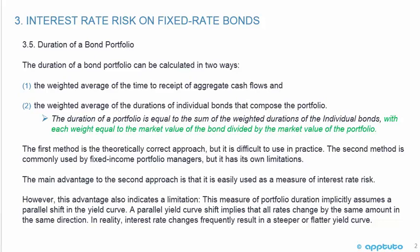This measure of portfolio duration implicitly assumes a parallel shift in the yield curve. A parallel shift implies that all rates change by the same amount in the same direction. In reality, interest rate changes frequently result in a steeper or flatter yield curve.